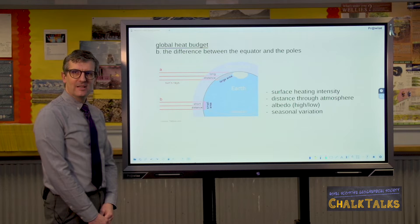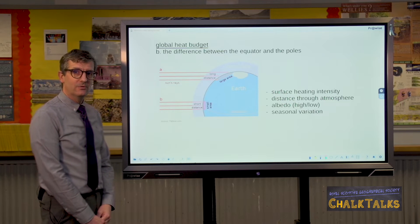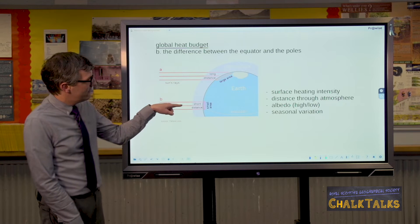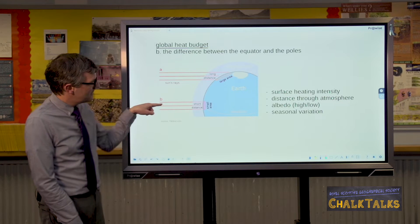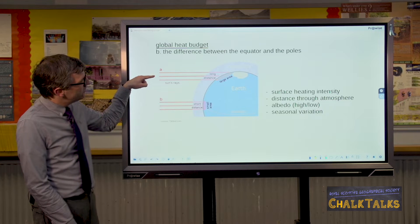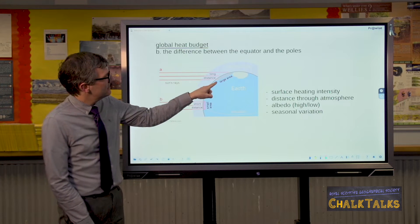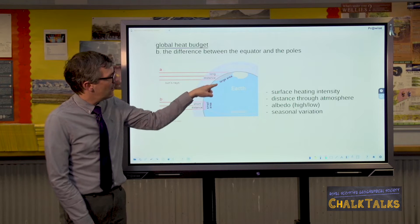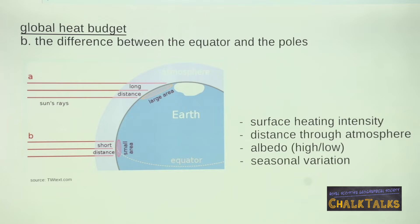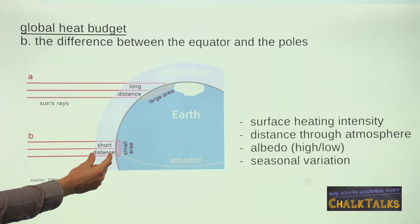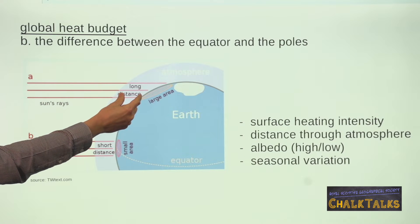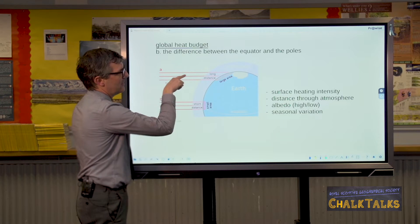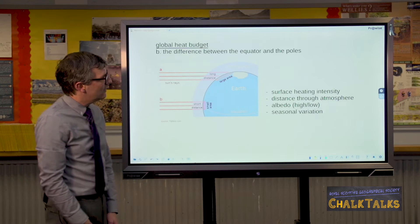The second part of the global heat budget is the difference between the equator and the poles. At the equator, energy coming in from the sun heats up a very small area, so it is very intensely heated, because it's coming in directly. Compared to the poles where it's coming in at an angle and is therefore spread and dispersed over quite a large area. Linked to this is the distance the energy has to travel through the atmosphere — at the equator it's a short distance, so not much energy is reflected and absorbed. Near the poles it's travelling through a greater distance of atmosphere because it's coming in at an angle, so there's more reflection and absorption.